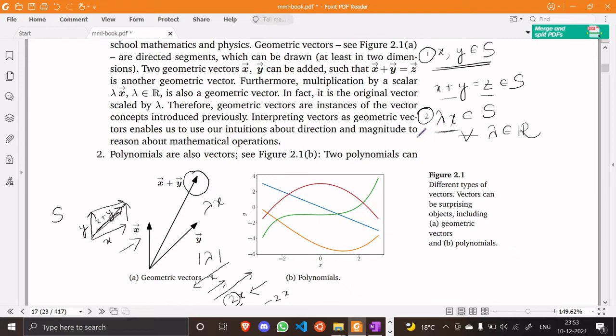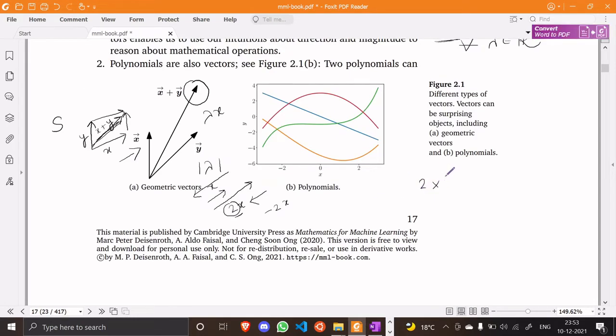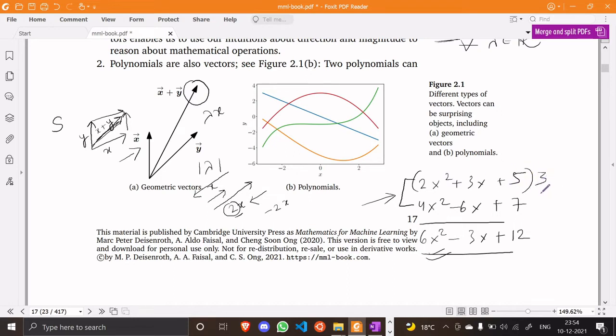Now moving on we see that whenever we consider a polynomial like 2x square plus 3x plus 5, this is some general quadratic polynomial and let's say we have another polynomial 4x square minus 6x plus 7. If you look at it carefully when we add these two polynomials we see that their sum is also another polynomial. So adding two polynomials leads to a polynomial and when we scale it by some real number let's say 3 this will make another polynomial right 6x square plus 9x plus 15.